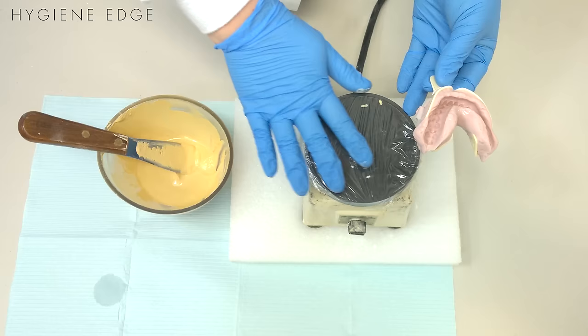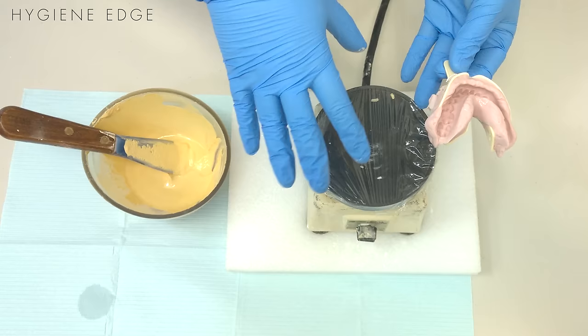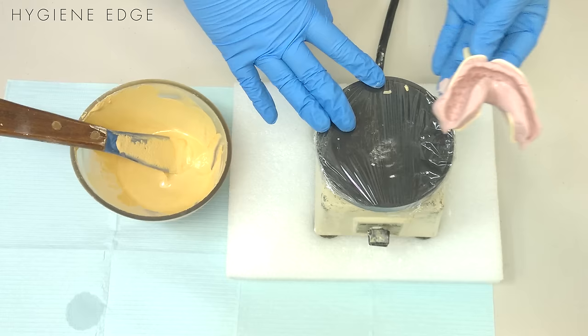To pour up an impression, the first thing you want to make sure to do is cover your vibrator in something—either a bag, saran wrap, or tin foil—anything to prevent the stone from drying and caking on there as you pour up your impression, because you'll notice it is a little bit of a messy process.